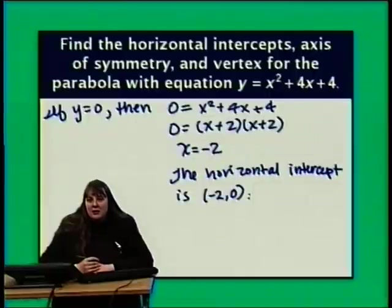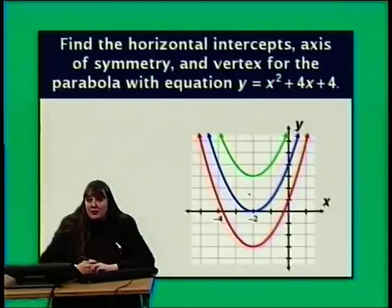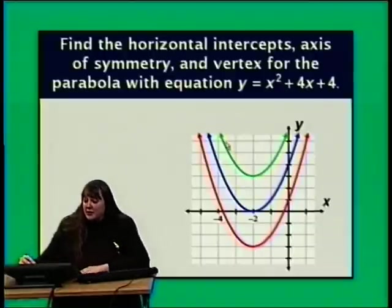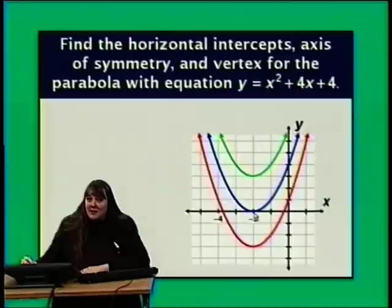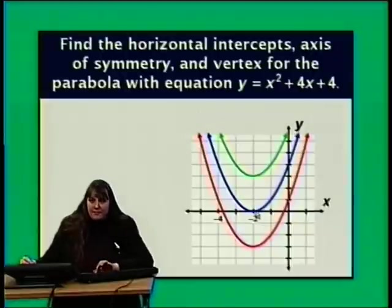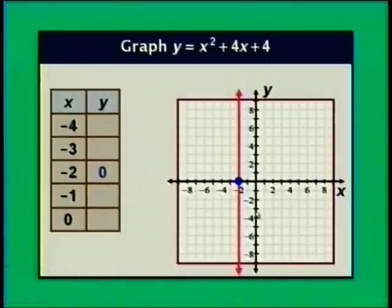The axis of symmetry lies midway between the horizontal intercepts — but this parabola has only one. There are only three possibilities for the vertex: above the x-axis (no horizontal intercepts), on the x-axis (one horizontal intercept), or below the x-axis (two horizontal intercepts). Since we have one horizontal intercept, the vertex must be right on the horizontal axis, meaning our vertex and horizontal intercept are the same point: (negative 2, 0). So the axis of symmetry is x equals negative 2.